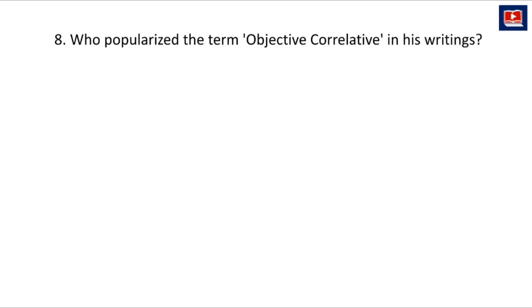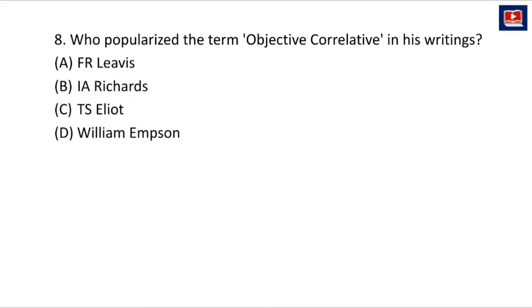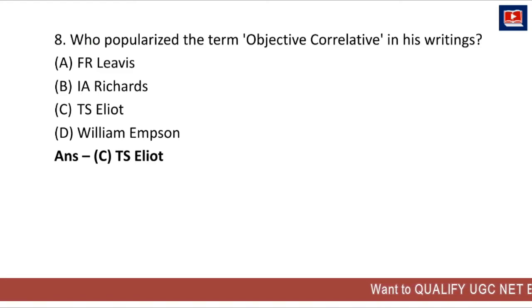The next question is: who popularized the term 'objective correlative' in his writings? The options are F.R. Leavis, I.A. Richards, T.S. Eliot, or William Empson. The term objective correlative is associated with Shakespeare, but it was popularized by T.S. Eliot in his writings.